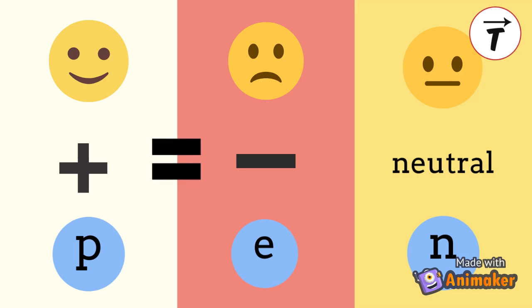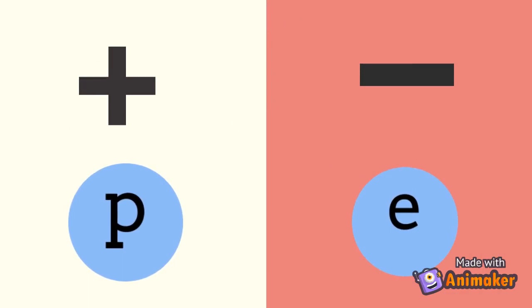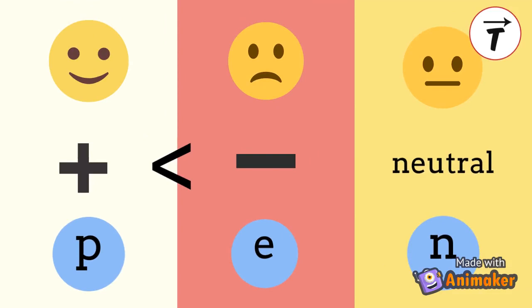When there is an imbalance in the number of protons and electrons, the object is electrically charged or electrified. The imbalance comes about by adding or removing electrons, as protons are bound very tightly inside the nucleus.